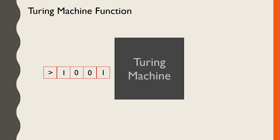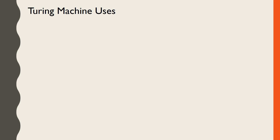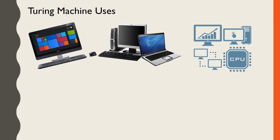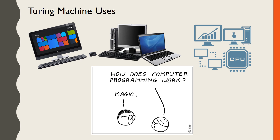Turing machines are useful for several reasons. They gave us the first theoretical model for building actual computers. Though computers no longer use this model, instead preferring electrical and a few mechanical components, Turing machines are still used widely in computer science as models for computation. Algorithms for solving problems can be expressed in Turing machine languages, and Turing machine languages can even help with understanding how programming works.